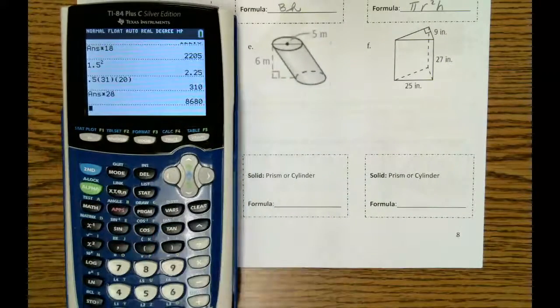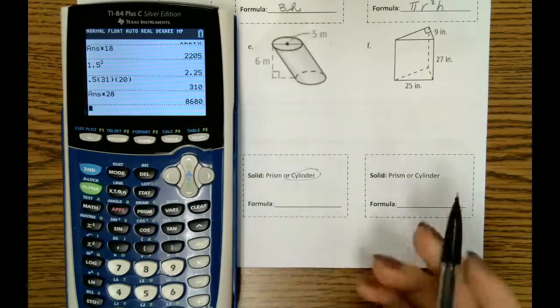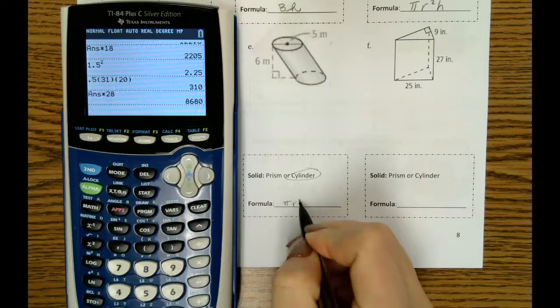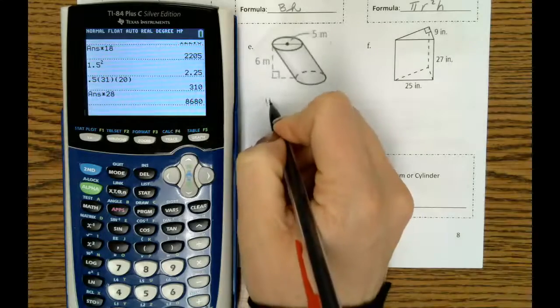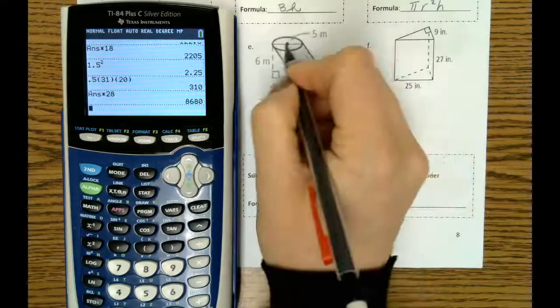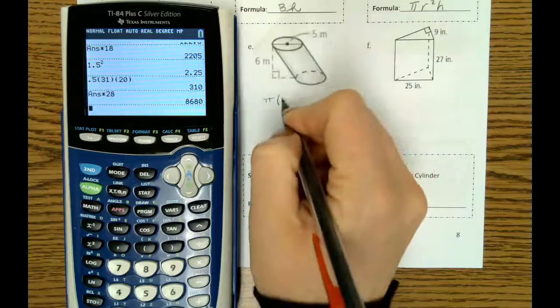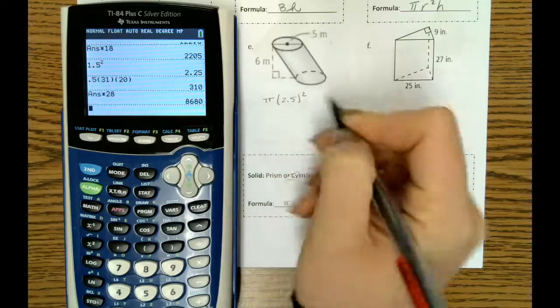Okay, this next one is a cylinder. It is slanted, but that's okay. So it's just pi r squared h. So here we'll do pi. And then our diameter is 5. So half of that would be 2.5 for the radius.